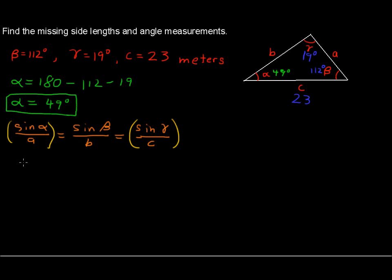so I'll write those down right here. Sine of 49 degrees over the unknown A equals sine of the 19 degrees over the side length C, the opposite side length. Oh, that C we know, that is 23.